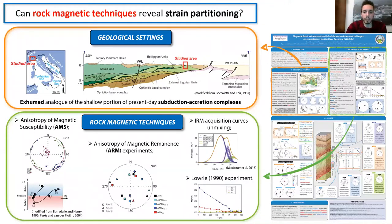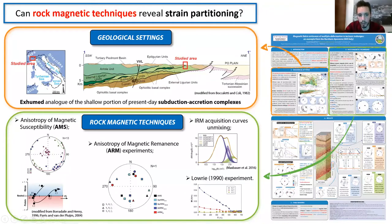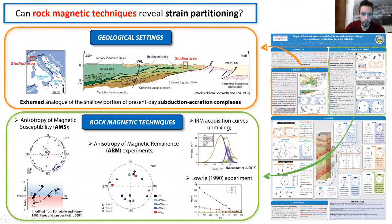To better characterize the magnetic fabric, I investigated the magnetic mineralogy and separated the orientation of different populations of ferromagnetic grains using FORC separate experiments.